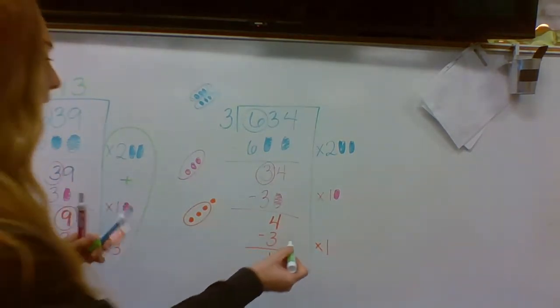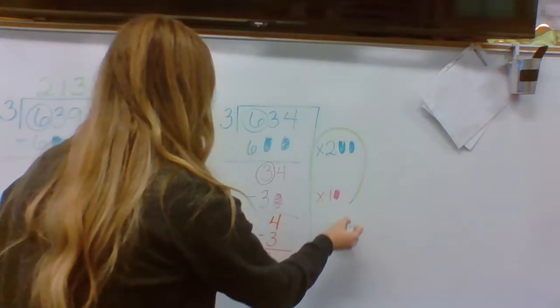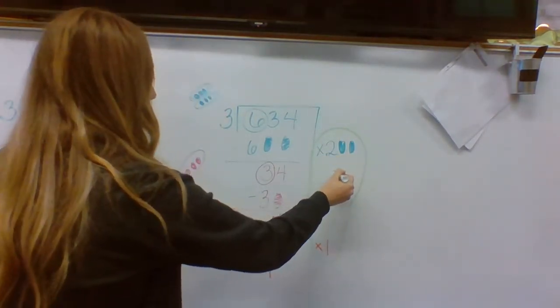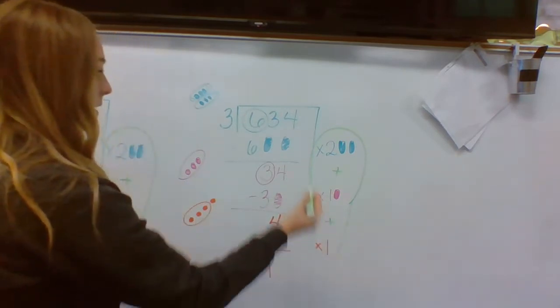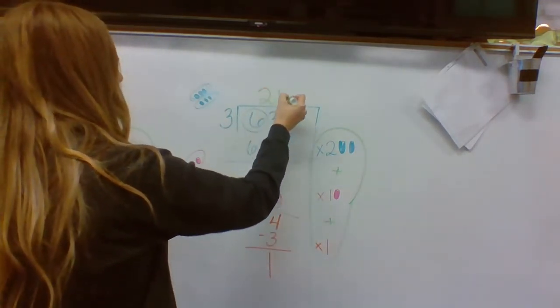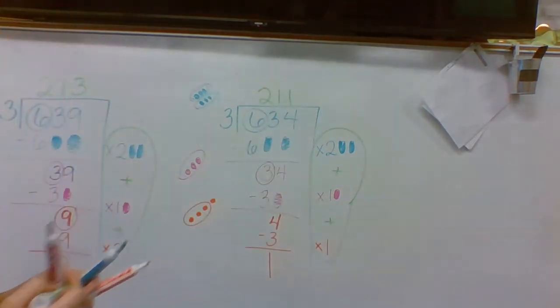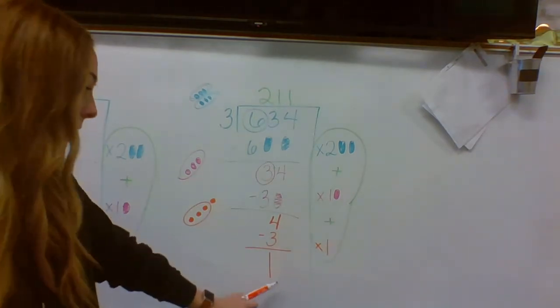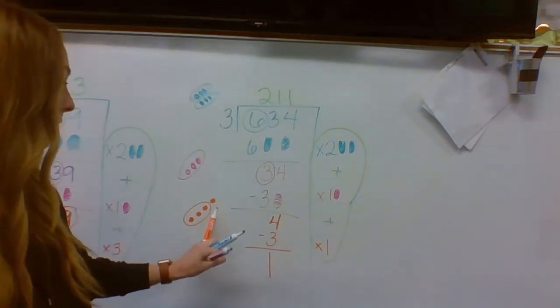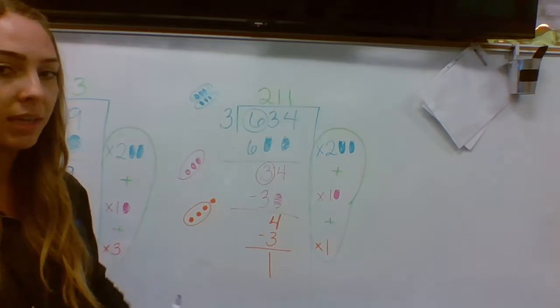I still add up all my numbers on the side. Just like normal. 200 plus 10 plus 1 is 211. But I can't just forget about this guy down here. Just like my picture, there's one left out. And in my math, there's one left out as well.